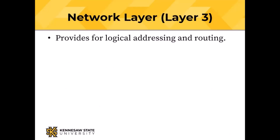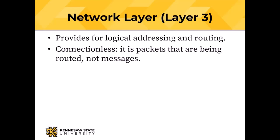The network layer provides logical addressing — this is where the IP address comes in — and routing. How does your Google query packet get to the Google data center? That's routing. The network layer is connectionless in that it routes packets independently, not entire messages — like two envelopes addressed to the same place that may not follow the same path or arrive in the same order.